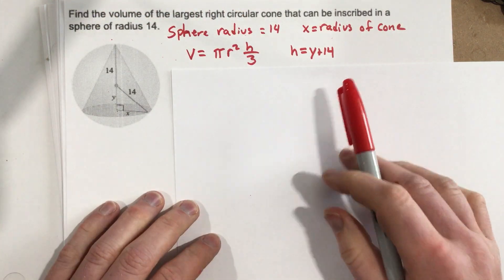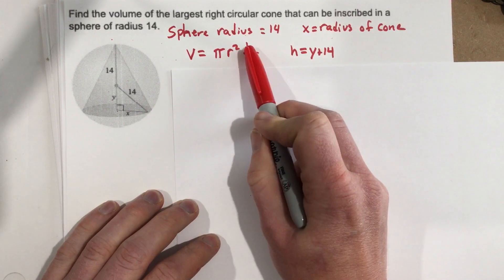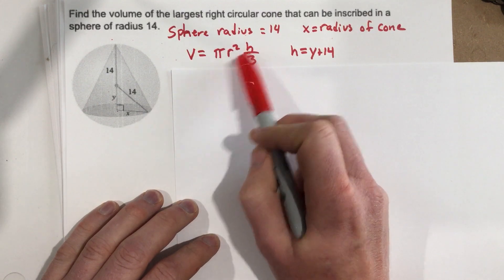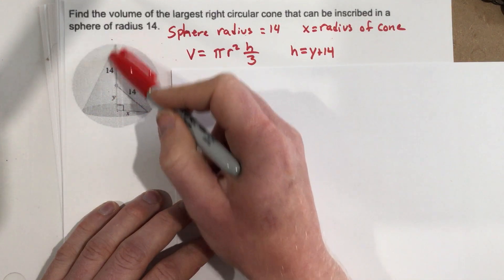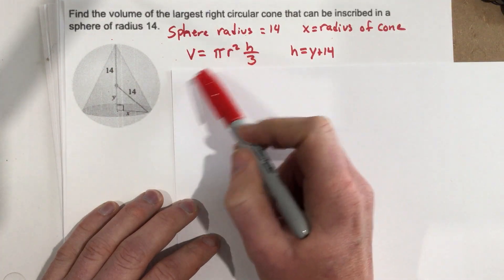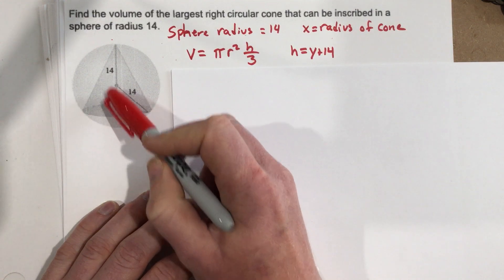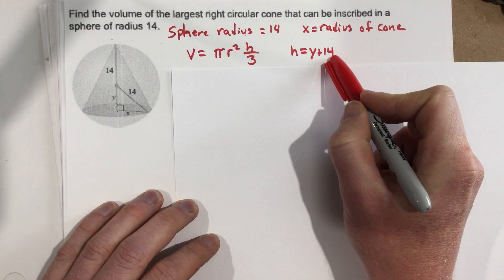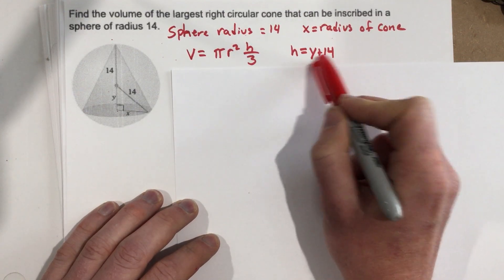In the formula we have r and h — two variables — but we want to write this formula so that we only have one variable. So I started to look at what we have going on in this problem. The height of the cone is y plus 14, so I wrote down that height h equals y + 14, and I'm going to replace h with y + 14 in just a second.